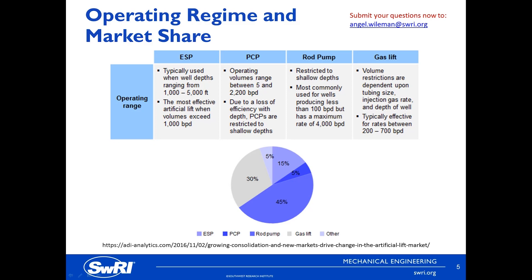Gas lifts are effective on lower rate applications as production is tied to many design factors such as tubing size, gas injection rate, and well depth. The lower figure represents a global breakdown of artificial lift units. As mentioned earlier, rod pumps are the leading lift method globally, followed by gas lifts, ESPs, and PCPs.